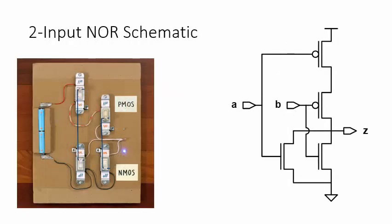This is the schematic of the two-input NOR logic gate. The two PMOS transistors are connected in series between the power supply and the output.